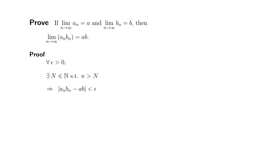Let's try to write the epsilon-N proof for the following statement: if the sequence aₙ converges to a and the sequence bₙ converges to b, then the sequence aₙ times bₙ converges to a times b.